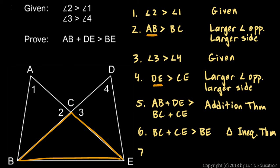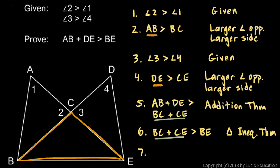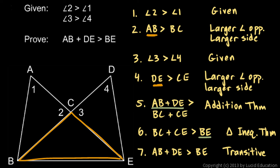Now it's just one more step of logic. AB plus DE is greater than BC plus CE, and BC plus CE is greater than BE. Think of it like this: thing one is greater than thing two, and thing two is greater than thing three, so thing one must be bigger than thing three. Therefore AB plus DE must be larger than BE — that's what we were trying to prove. The reason is the transitive property of inequality, and we're done.